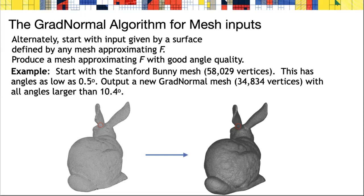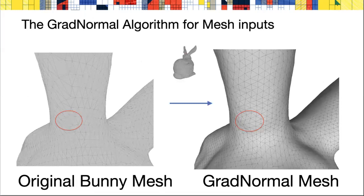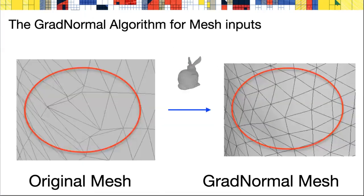To illustrate this, look at the area at the base of the left ear of the rabbit. If you hone in on this a little bit, you'll see that the angles are quite bad near this region in the bunny. But when the GradNormal mesh is examined, you'll see that its angles are more uniformly away from 0, closer to 60 degrees.